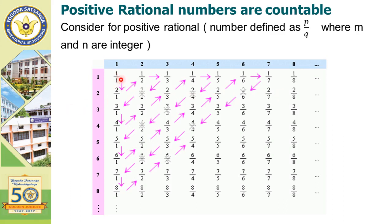Then we represent the numbers diagonally. The first number will be 1/1. The second number will be 2/1. The third number will be 1/2. Then we include 1/3, 2/2, 3/1, and so on, as shown in the diagram.